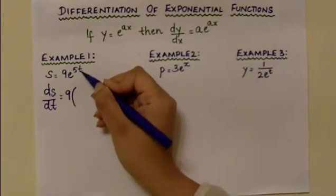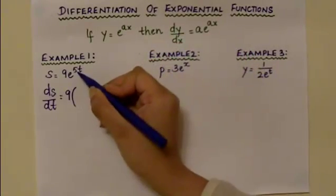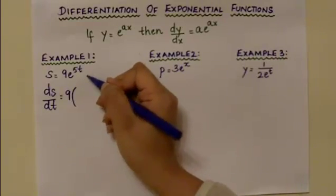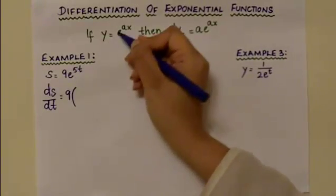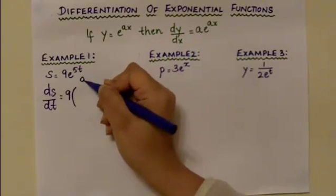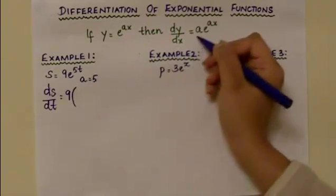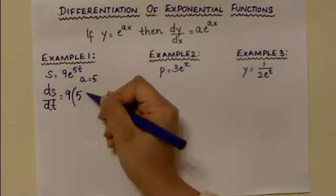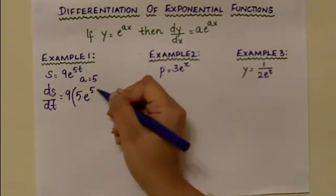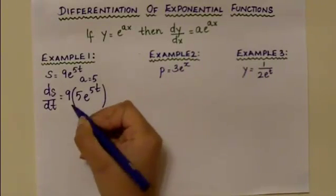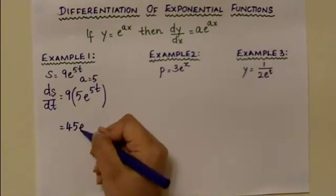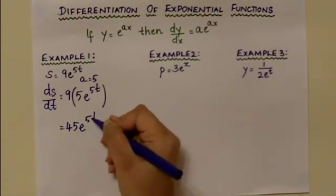The coefficient of the variable t is 5. Comparing with the original formula, a equals 5. Substituting into the formula gives 5e to the power of 5t. Therefore, 9 times 5 is 45, and the answer is 45e to the power of 5t.